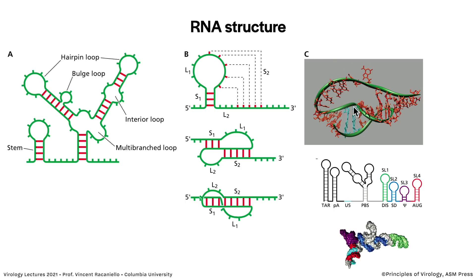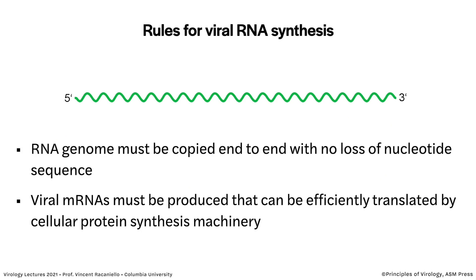These structures are important for protein-RNA interactions. The five-prime region of HIV-1 RNA is full of stem-loop structures with all kinds of functions we'll talk about in this course. Now let's talk about RNA synthesis in general. Two general rules: first, the RNA genome has to be copied from end to end with no loss of sequence — you can make mRNAs that are shorter than the genome, but if you want to make more genomes, they have to be complete copies. Second, you also have to make mRNAs that can be translated. For some viruses the genome is the same as mRNA — the poliovirus genome is an mRNA — but for negative-strand viruses, mRNAs have to be made separately.